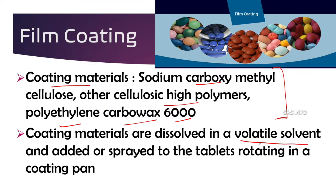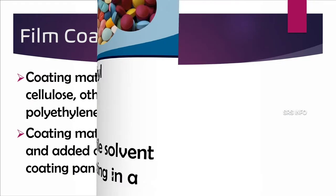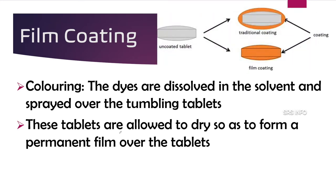These coating materials are dissolved in a volatile solvent, and this volatile solvent is sprayed onto the tablets which are rotating in the coating pan — the same process as in sugar coating. After giving this coating, the tablets are allowed to dry.